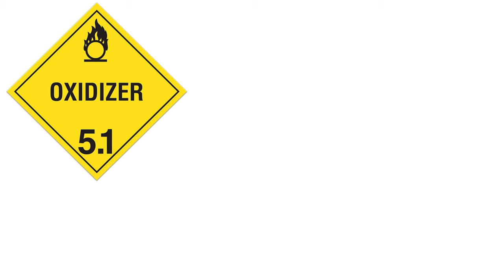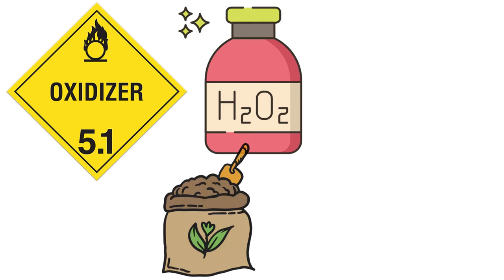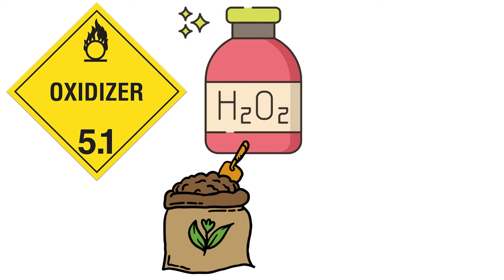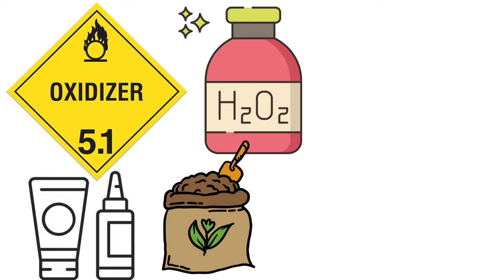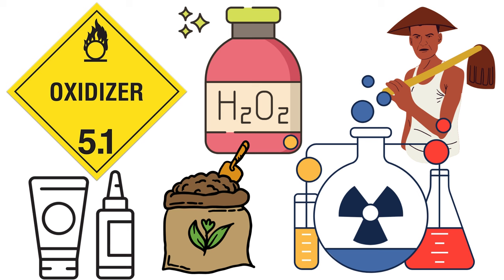Class 5 covers Oxidizing Substances — substances that can cause other materials to combust more readily. Peroxides and some fertilizers fall into this category. Peroxides, often used in hair bleach, are classified as Class 5 because they can react violently with other substances. Oxidizing substances are frequently used in agriculture and chemical manufacturing, but careful handling and storage are necessary to prevent unwanted reactions.